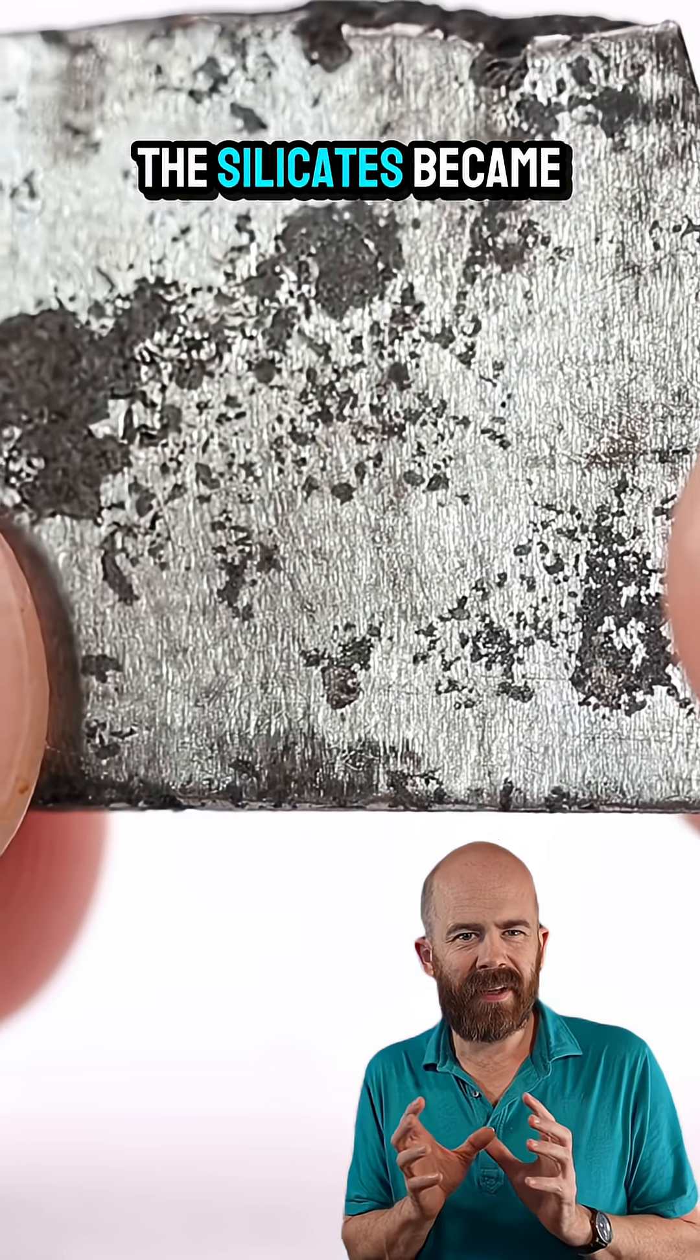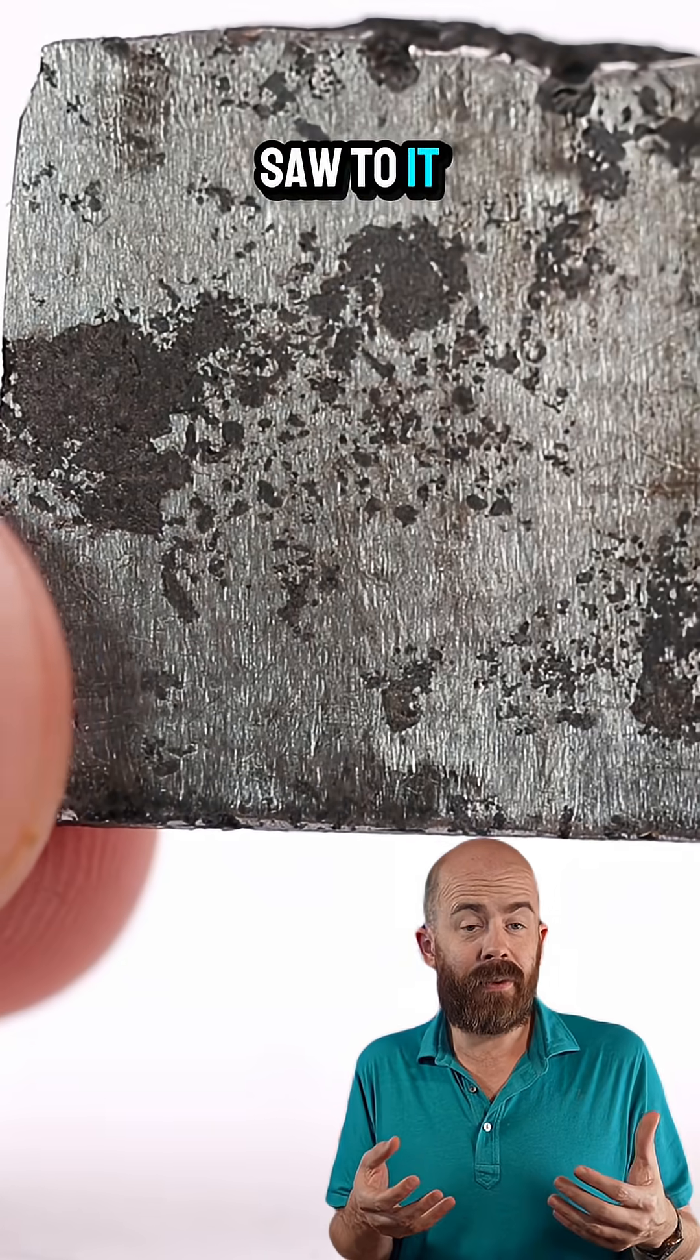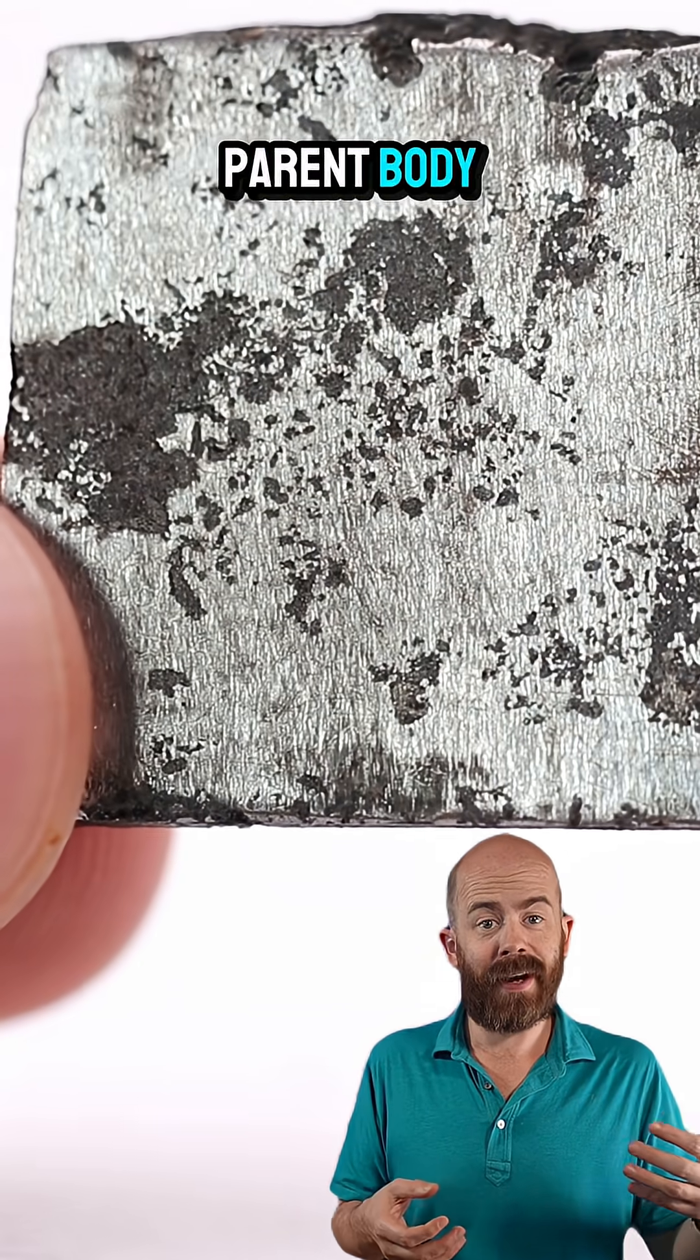As the mixture cooled, the silicates became trapped within the metal, and eventually gravity saw to it that the material ejected from the parent body landed here on earth.